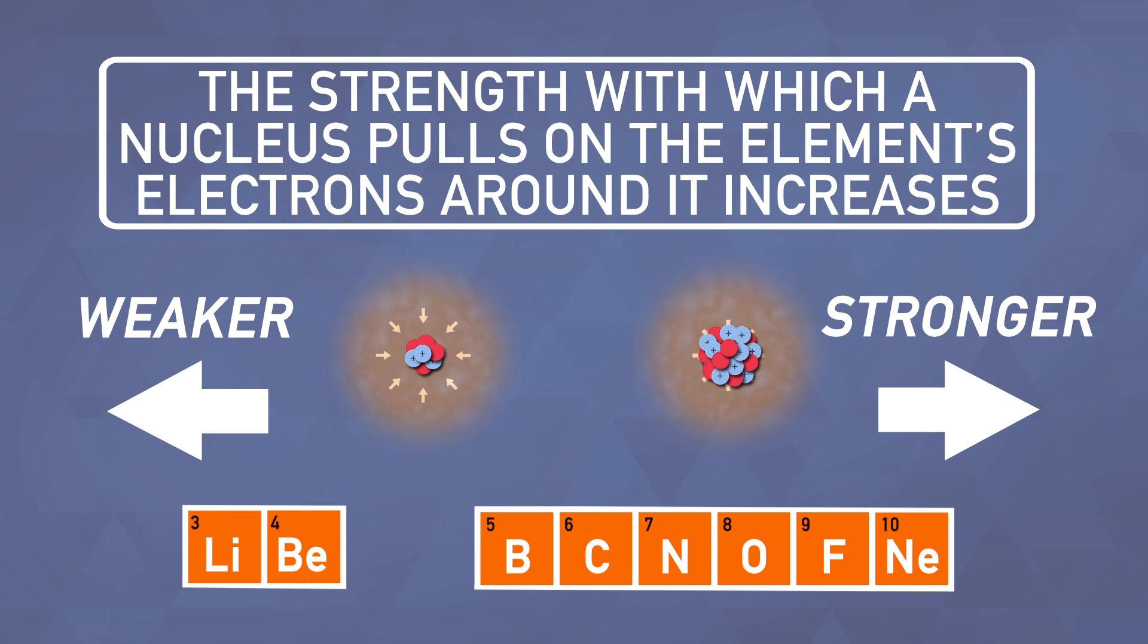Nuclei of elements on the left side of the table pull relatively weakly, so they are more likely to lose electrons in a chemical reaction. Nuclei of an element on the right pull much more strongly, so they are more likely to gain electrons in a chemical reaction.